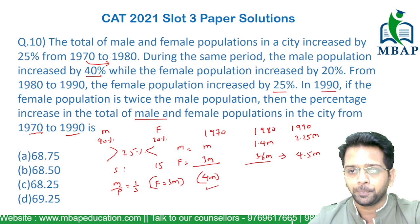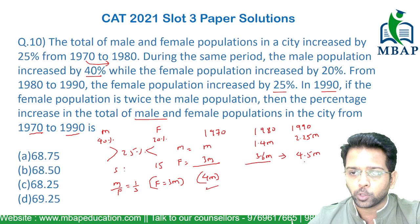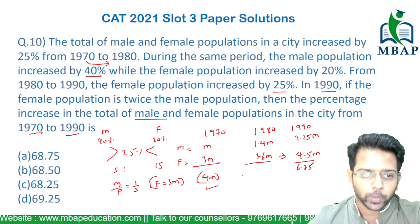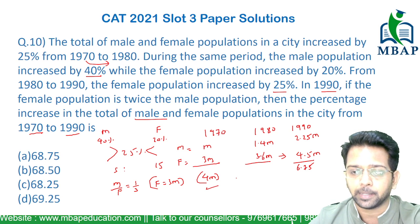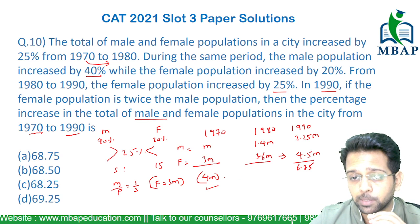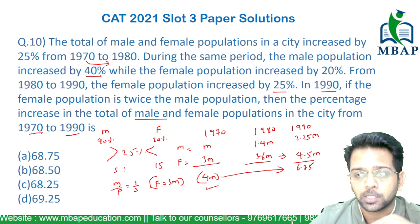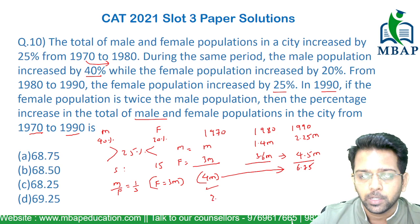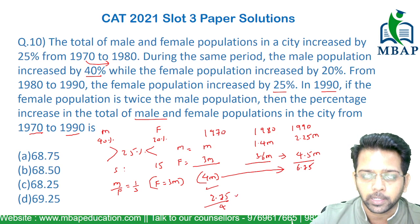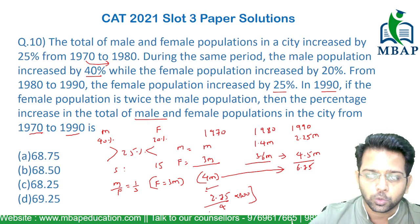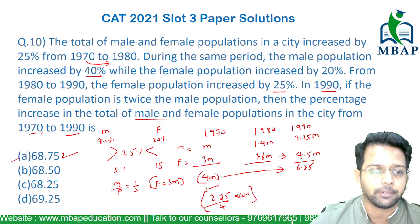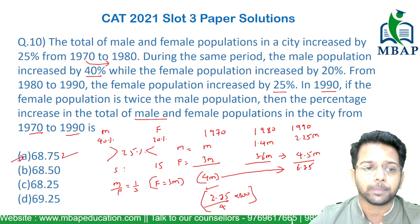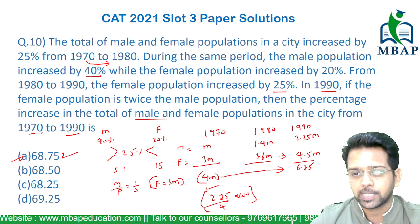In 1970 the total population is 4m, and in 1990 it is 2.25m plus 4.5m which equals 6.75m. The percentage increase from 1970 to 1990 is an increase of 2.75 on 4, so it's 2.75 divided by 4 times 100, which gives 275 divided by 4 — the final answer is 68.75%.